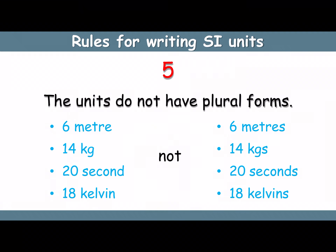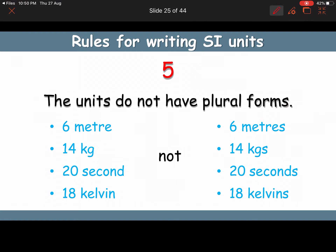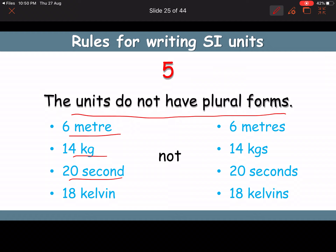Rule 5: units do not have plural forms in symbols. We write '6 m' not '6 ms', '14 kg' not '14 kgs', '20 s' not '20 ss', '18 K' not '18 Ks'. These plural forms are wrong.